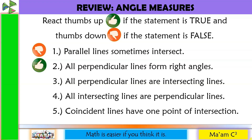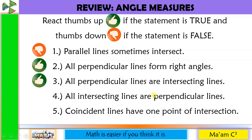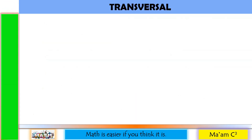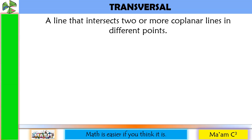Number 3: All perpendicular lines are intersecting lines. This is thumbs up. How about we interchange? All intersecting lines are perpendicular lines. This is thumbs down. Last one: Coincident lines have one point of intersection. This is thumbs down.